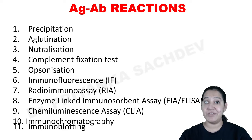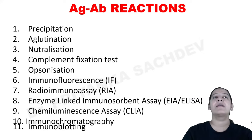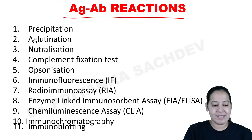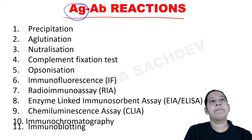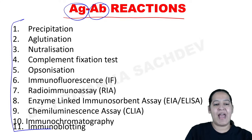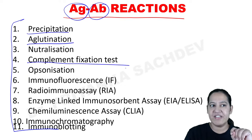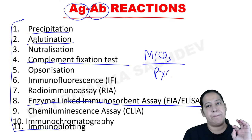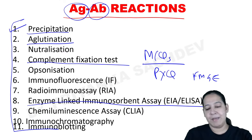Today I am here to continue my microbiology series launched for FMG students. In microbiology we have covered general microbiology, then immunity, and within immunity we have started antigen-antibody reactions. There are 11 types of antigen-antibody reactions; yesterday we covered precipitation. Today I will start with agglutination, then complement fixation, and finally ELISA.